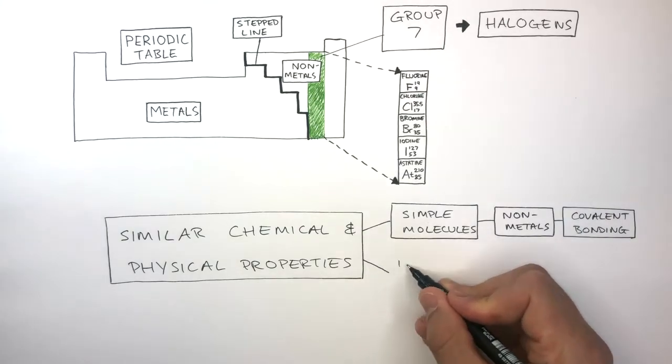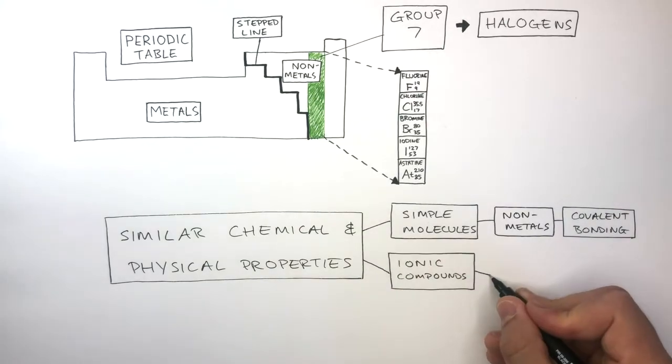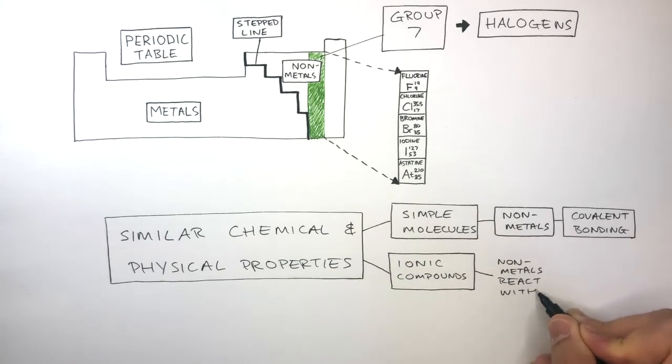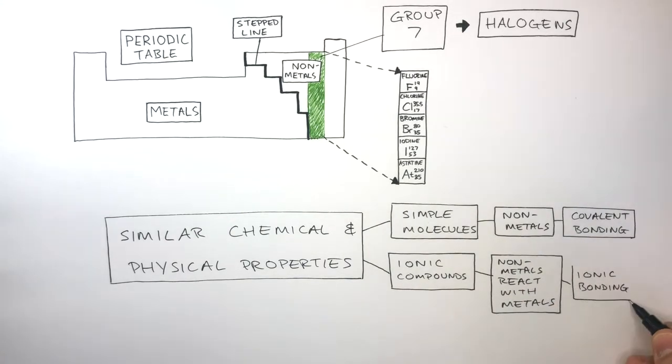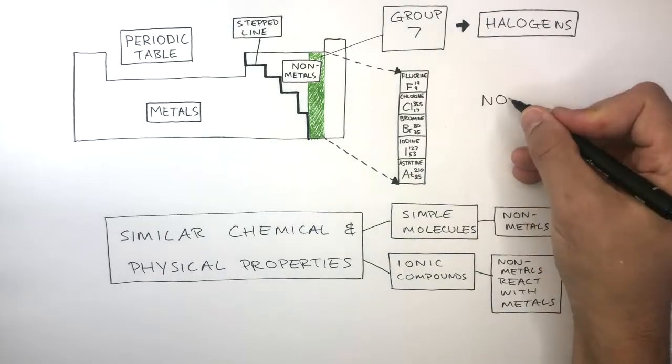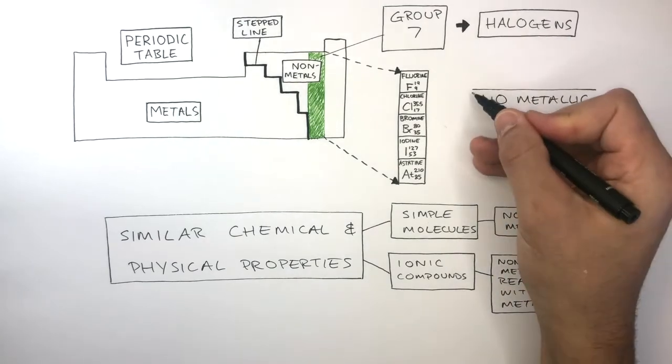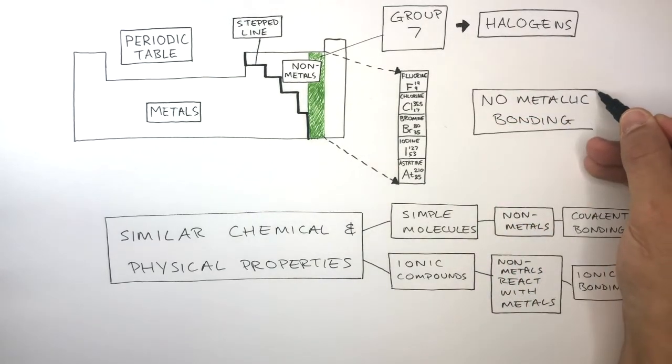Whereas if they form ionic compounds, the Group 7 non-metals will react with metals, and there will be ionic bonds between the ions in the compounds. And because halogens are non-metals, they will not form metallic bonding with any atoms. Metallic bonding only takes place between metal atoms.